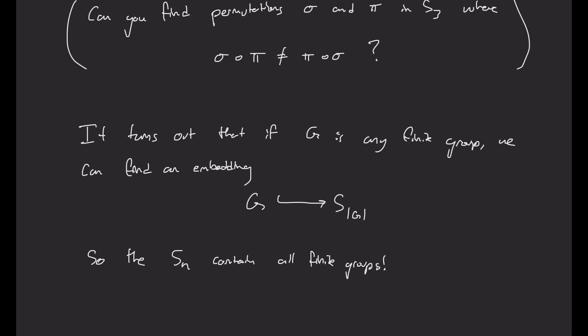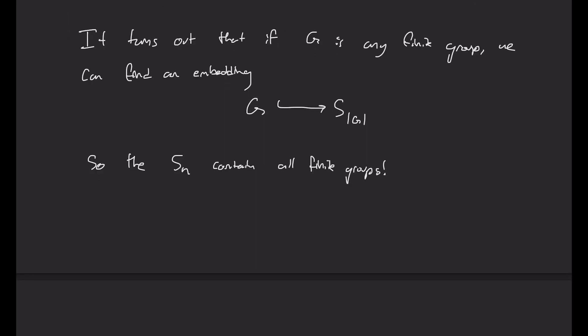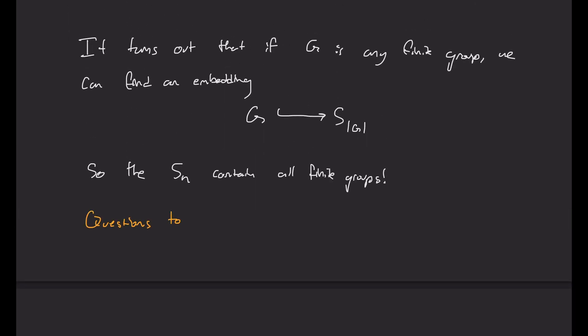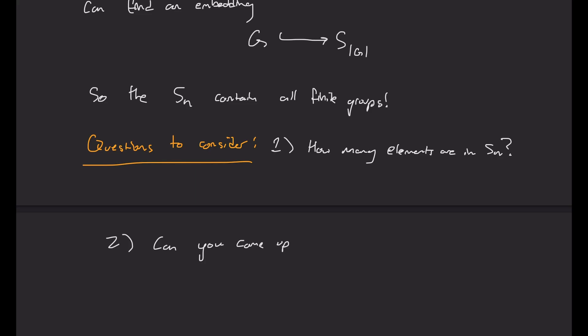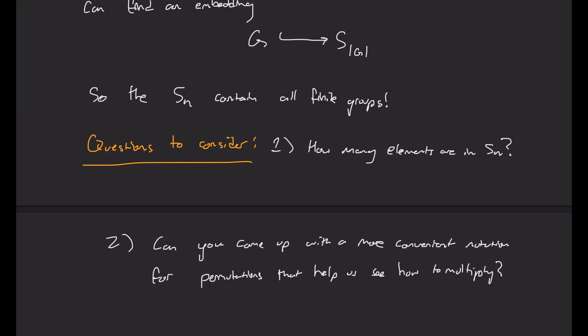There are tons of open doors here to explore. Some questions to consider: how many elements are there in S_n? Can you come up with a more convenient notation for permutations that helps us see how to multiply? And can you see any relations between S_3 and the group of symmetries of a triangle? If you want to see a relation between some more visual symmetries, take a look at my other video where I talk about symmetries of regular n-gons.